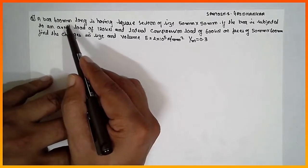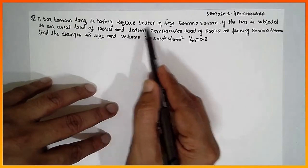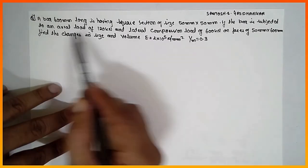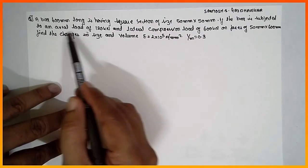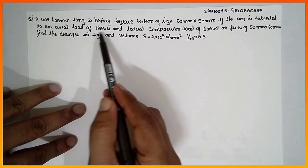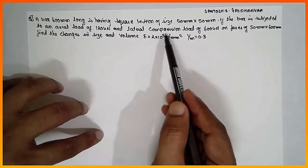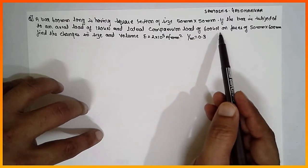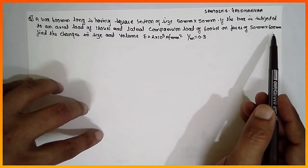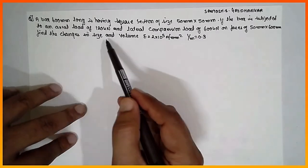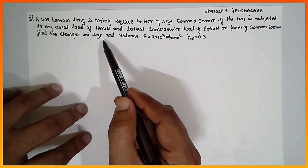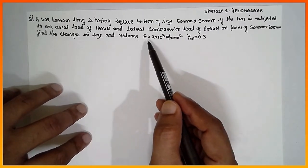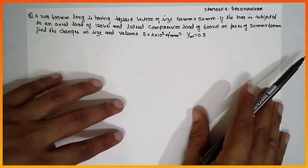A bar of 600 mm long having a square section of size 50×50 mm is given. An axial load of 120 kilonewton and a lateral compressive load of 600 kilonewton on the face of 50×600 mm are applied. Find the change in size, that means find the change in size and volume. Young's modulus and Poisson's ratio are given.